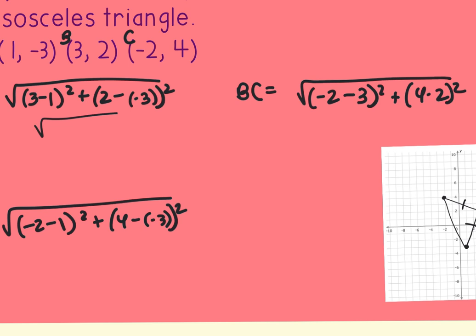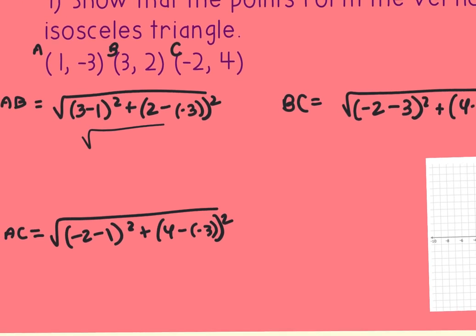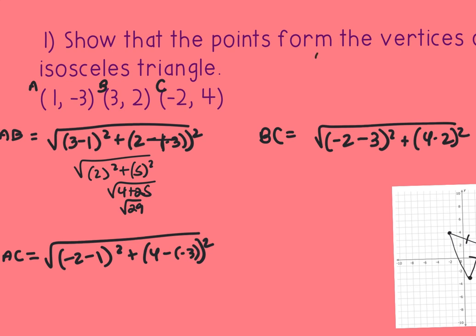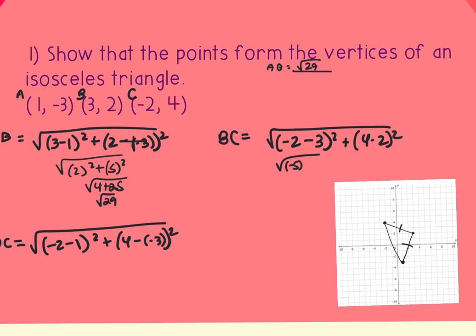I plugged in A and B first — the first two points — and I get 2 squared plus 5 squared, which is 4 plus 25, giving the square root of 29. Remember to simplify if you can; 29 is prime so it can't be simplified. For BC I get the square root of negative 5 squared plus 2 squared, which is 25 plus 4, giving another square root of 29. Since those are the same, if I was just classifying this as isosceles, that'd be enough.